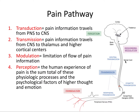— this descending modulation, where the central nervous system is limiting the flow of pain information. And then we finally have perception, which is the human experience of pain being the sum total of these physiological processes, and also the psychological factors of higher thought and emotion. So considering that psychosocial component of chronic pain.